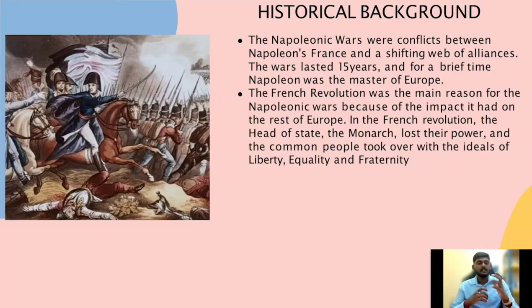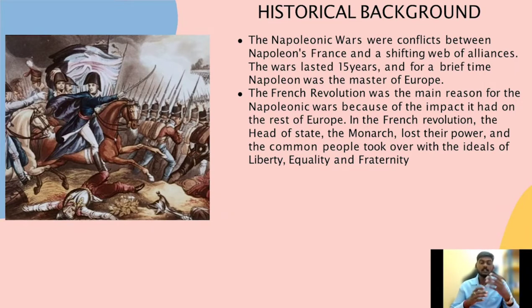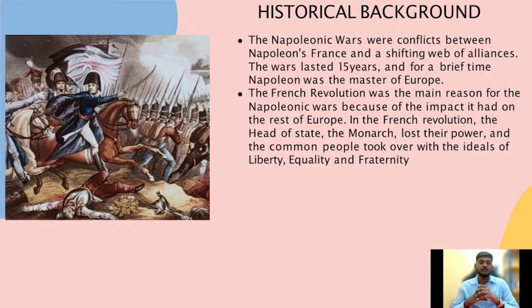Let's recap the historical background of the German Historical School. When we focus on the Napoleonic Wars, it was a conflict between Napoleon's forces and a shifting map of alliances. The war lasted for 15 years and for a brief time Napoleon was the master of Europe. The French Revolution was the main reason for the Napoleonic Wars because of the impact it had on the rest of Europe.